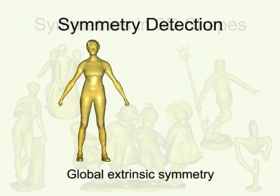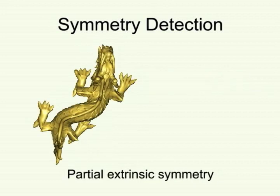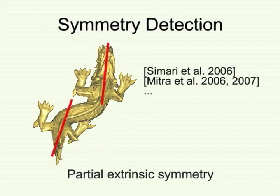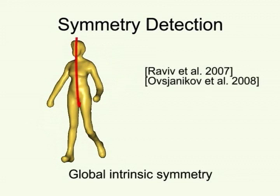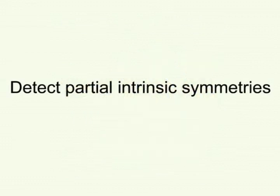There have been algorithms designed to detect global extrinsic symmetry, partial extrinsic symmetry, and global intrinsic symmetry. What has been missing is a robust algorithm for detecting partial intrinsic symmetries.